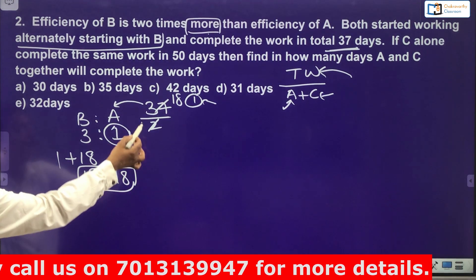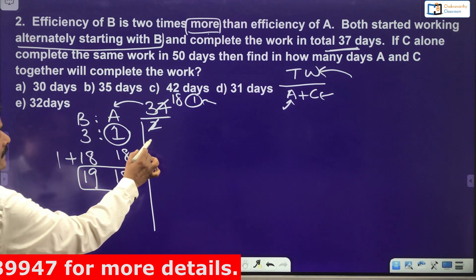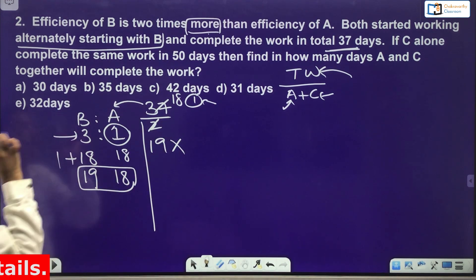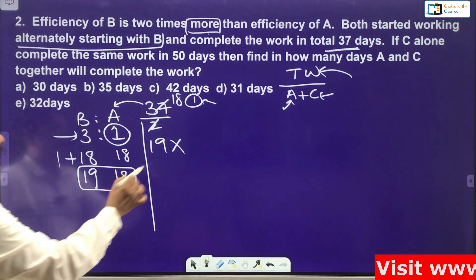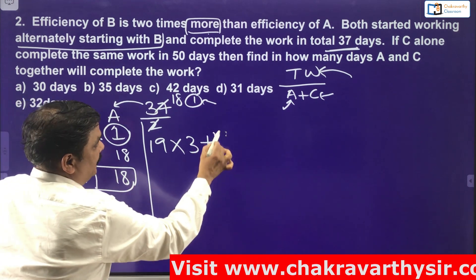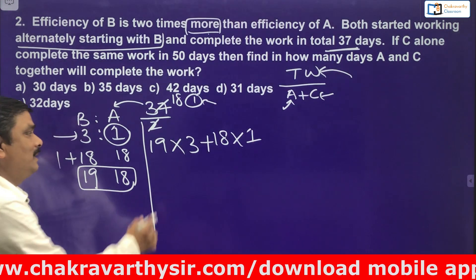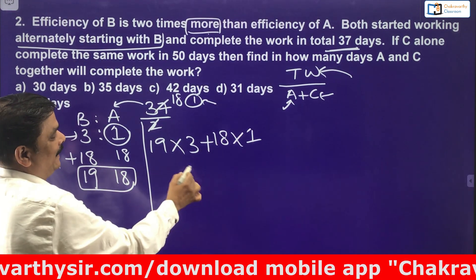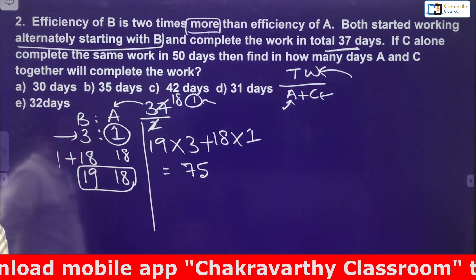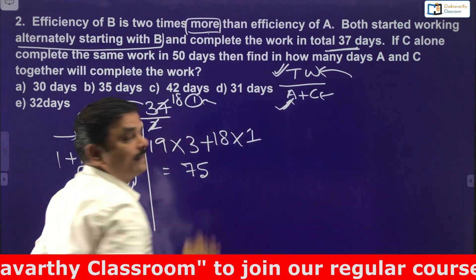Now we can find the total amount of work. B worked for 19 days with a capacity of 3 units per day, and A worked for 18 days with a capacity of 1 unit per day. So total work = 19 × 3 + 18 × 1 = 57 + 18 = 75 units. Total amount of work is 75 units.